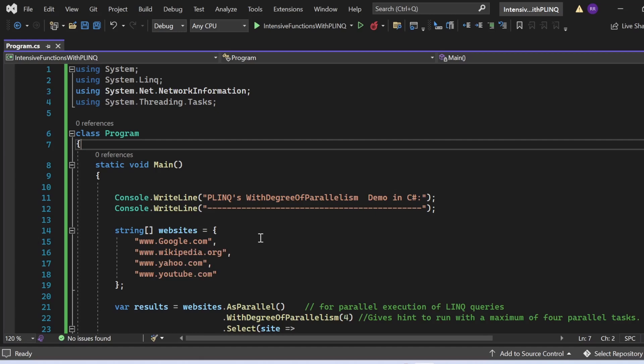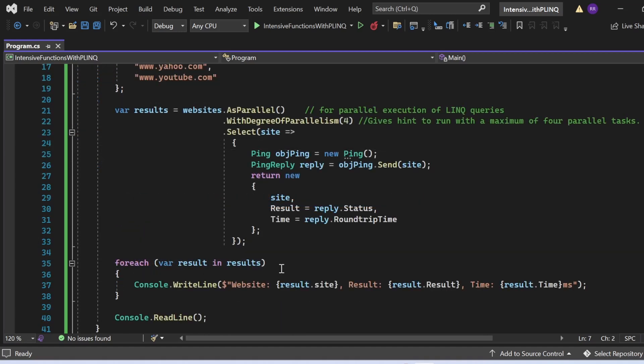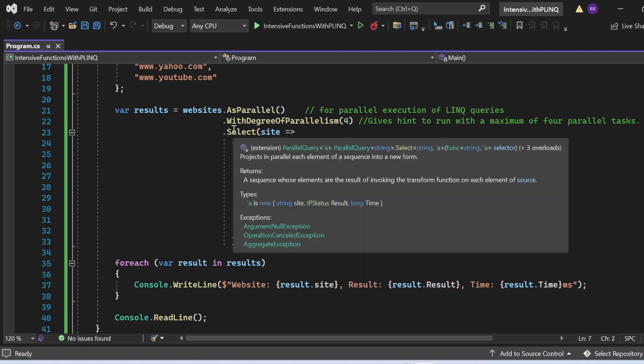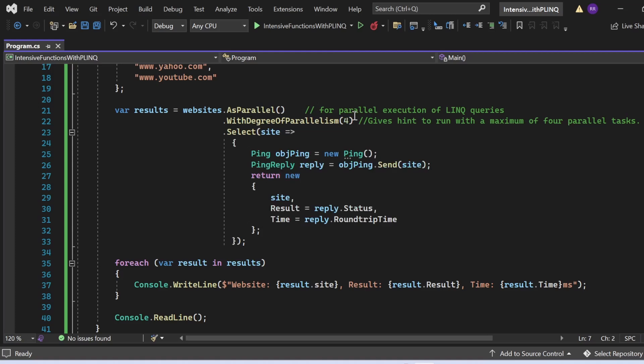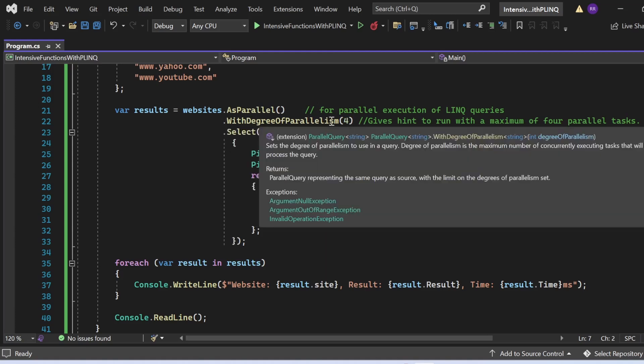Basically this websites string array is holding URLs of the websites. Then I wrote one PLINQ query: var results = websites.AsParallel(). I have written this AsParallel method for parallel execution of the LINQ queries, then I have written WithDegreeOfParallelism(4). With this method, I am just giving the hint to run with a maximum of four parallel tasks.